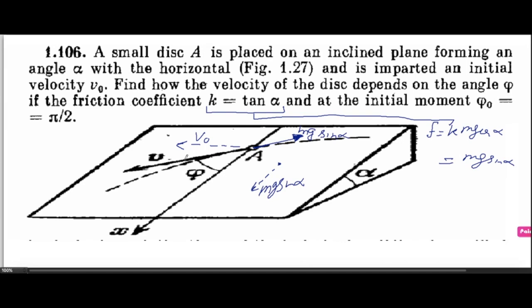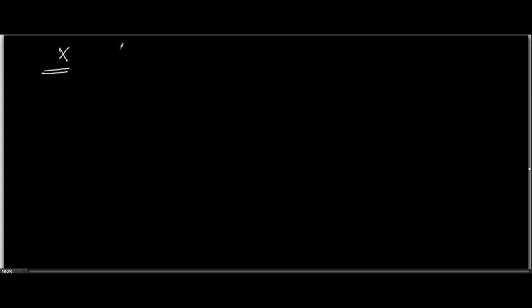Now I'll form two different equations — one along the tangential direction and the other along the x-direction. There are two forces along the x-direction: one is mg sin α, and the second is the component of friction force along the x-direction, which is mg sin α cos φ.